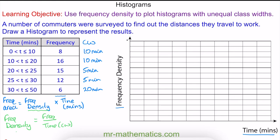Now we're going to begin by working out the frequency density for each group. The frequency density is the frequency, which is 8, divided by the class width of the time, which is 10. So this is 0.8.